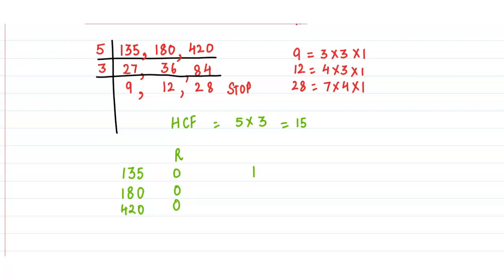But what about the numbers given in the question: 137, 182, and 422? Remember, we subtracted 2. So they should give a remainder of 2 when divided by 15. That means 15 is the greatest number which will divide 137, 182, and 422 to give a remainder of 2 in each case. I hope it is clear.